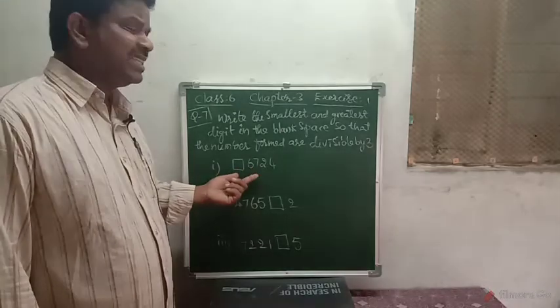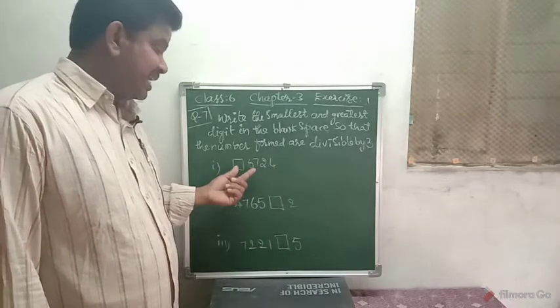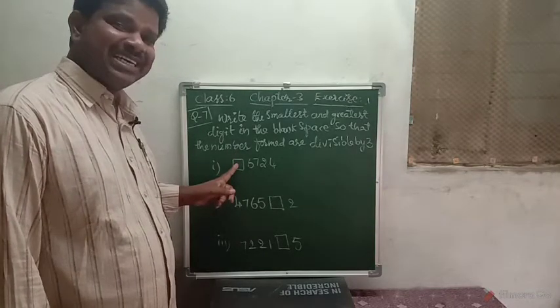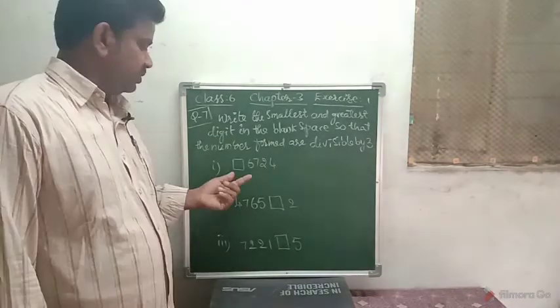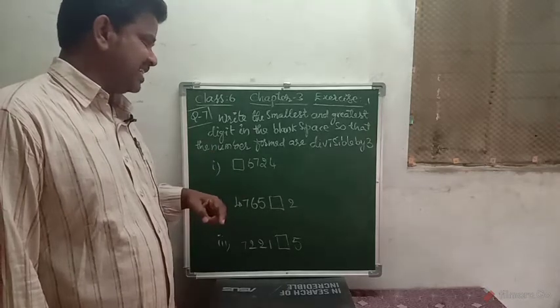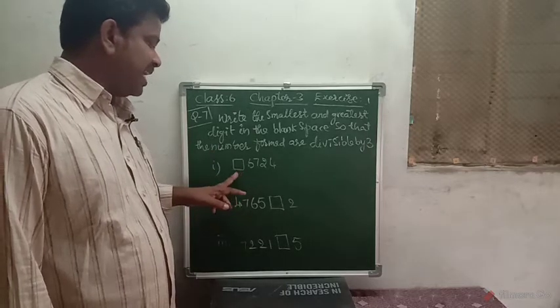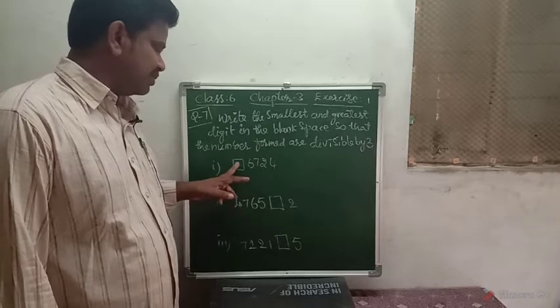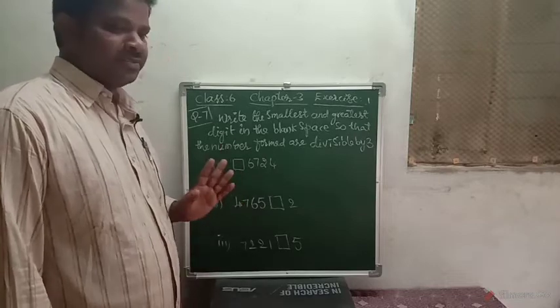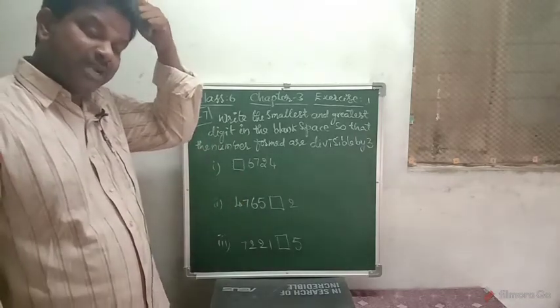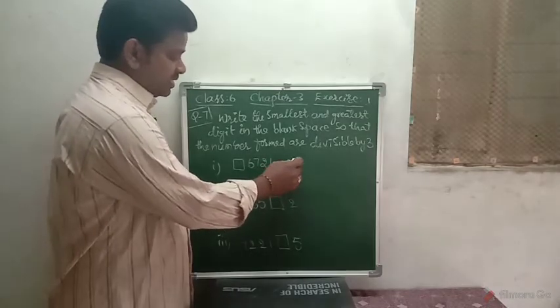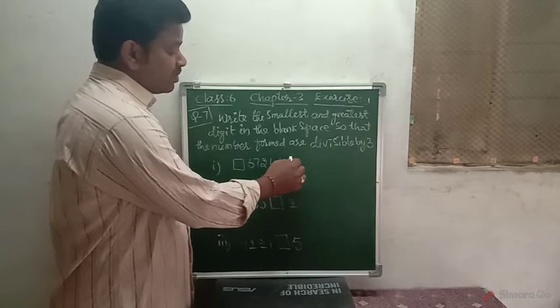Here, by using the test of divisibility of 3, let us write the smallest and greatest digits in the space given. By writing these digits in the blank, that number should be divisible by 3. The divisibility test for 3 uses the sum of digits. So let us add all the digits of this number.